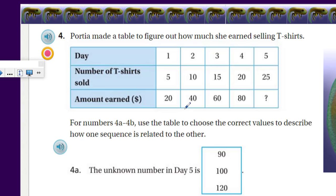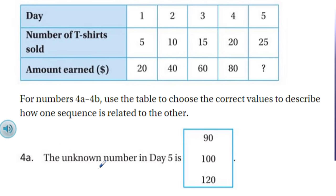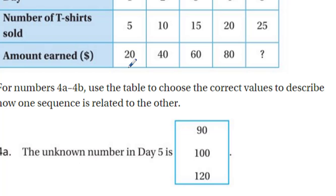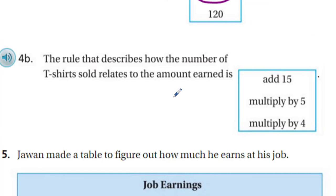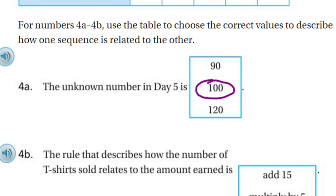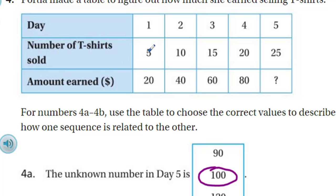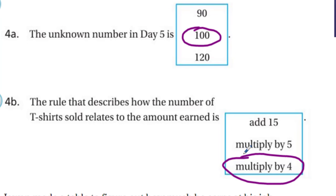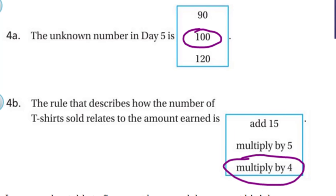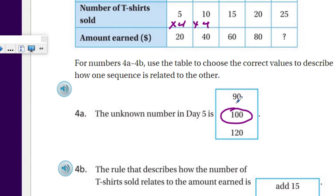The number of shirts increases by five each time and the earnings increase by twenty each time. To choose the correct values for how one sequence relates to the other: the unknown number on day five — twenty, forty, sixty, eighty — I think you can get that. The rule that describes how the number of t-shirts sold relates to the amount earned: five times four is twenty, ten times four is forty — the rule is multiply by four. That's what we call the function rule.